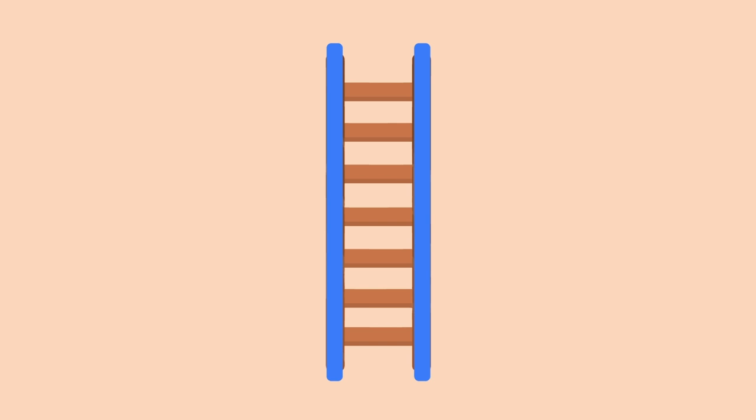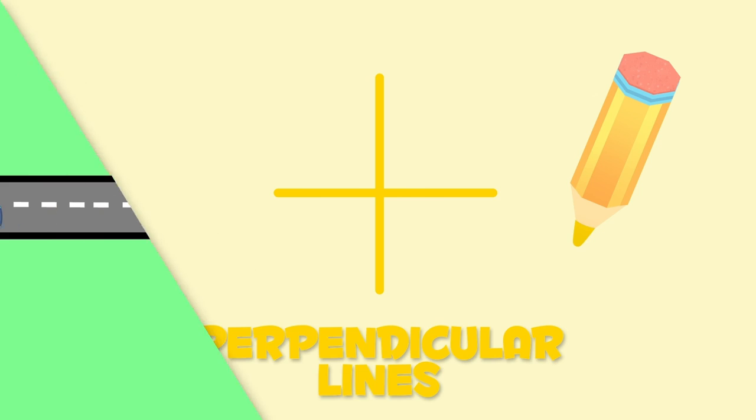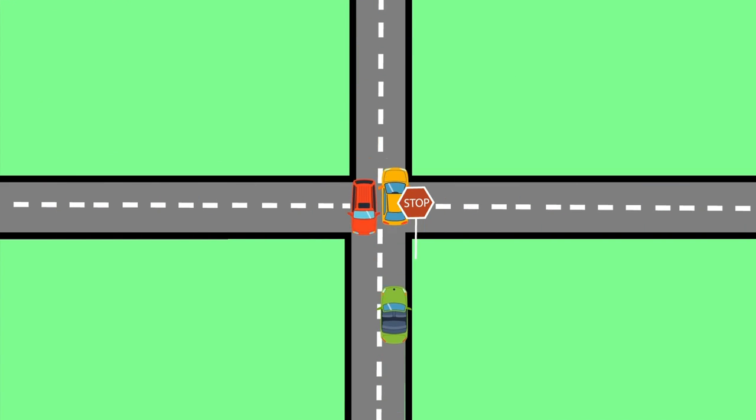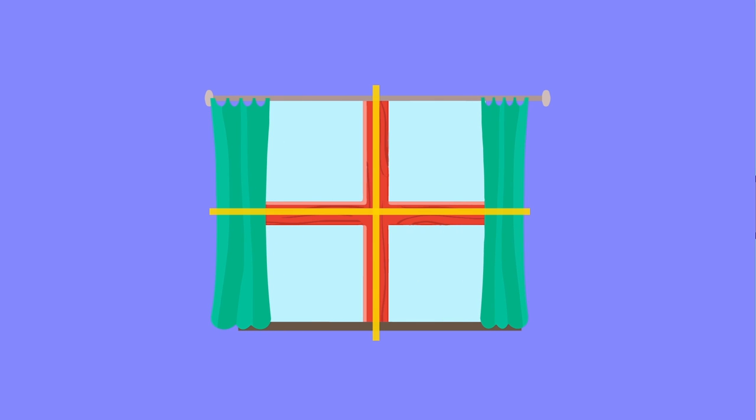The lines in this notebook or the steps of this ladder are parallel. We can turn a parallel line to make it vertical. When parallel lines crisscross they change to perpendicular lines. Perpendicular lines look like this crossroads or the frame of this window — what a lovely day!